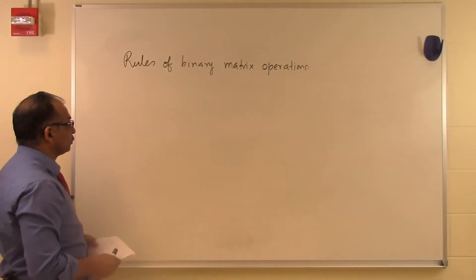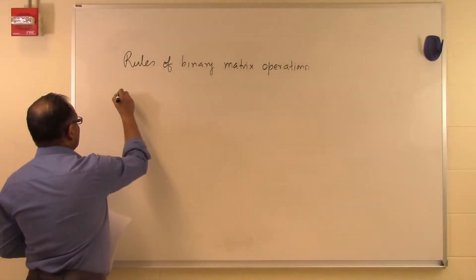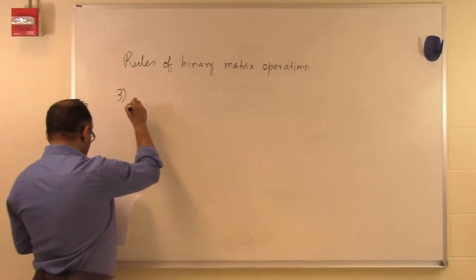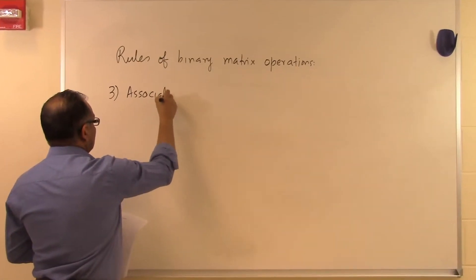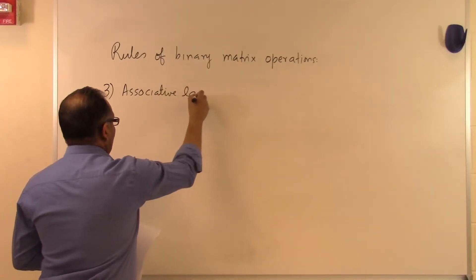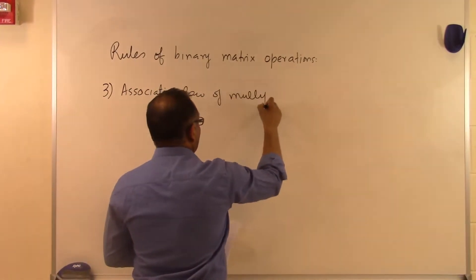In this segment we are talking about some rules of binary matrix operations. So let's talk about the associative law of multiplication.